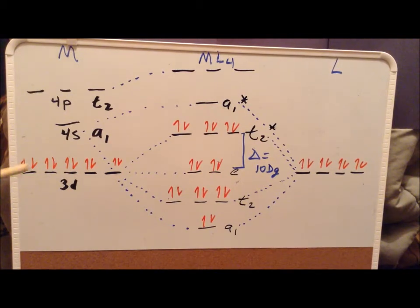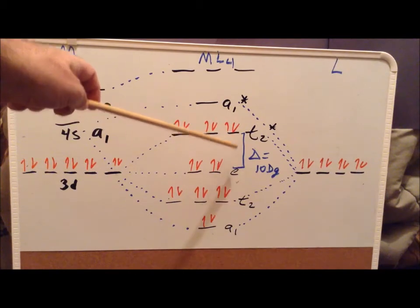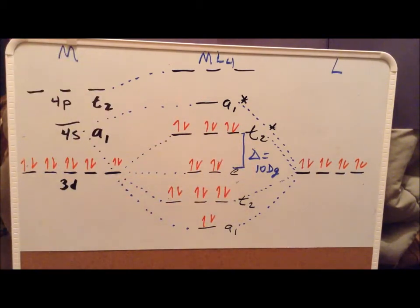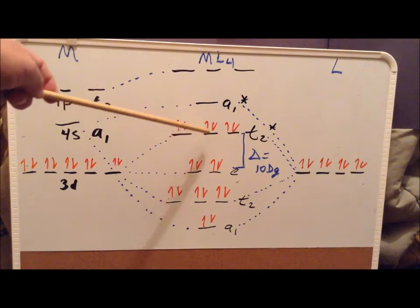So an important thing to see here also is that the splitting delta, sometimes called 10DQ, in the tetrahedral case is between the two non-bonding E orbitals and the T2 antibonding orbitals.